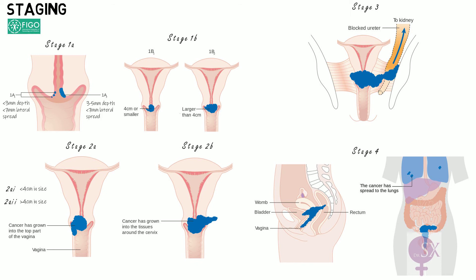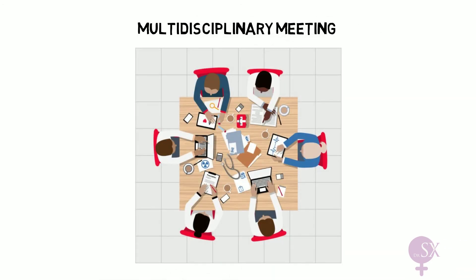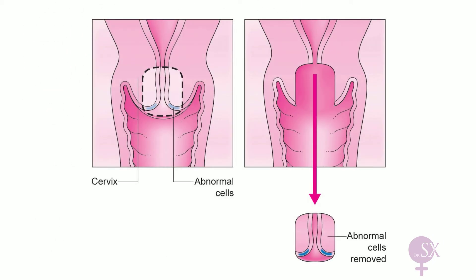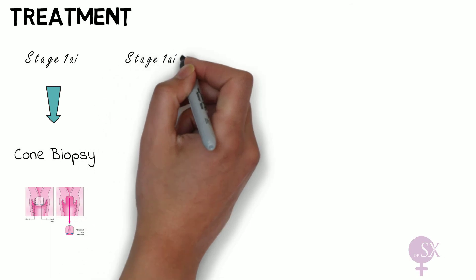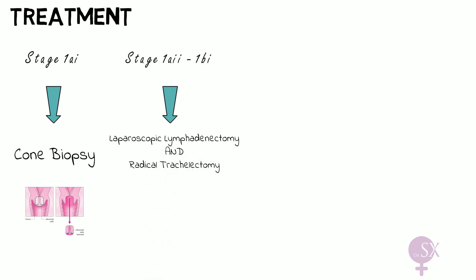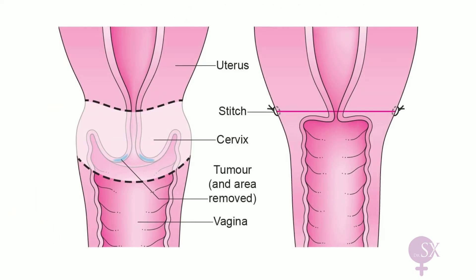Staging defines the most appropriate management. All cases are discussed at a multidisciplinary meeting including gynecologists, oncologists, radiologists, and pathologists. For stage 1a1, a cone biopsy is performed — removal of a cone-shaped piece of tissue from the cervix — sent to the lab to ensure clear margins. Like LLETZ, this may also lead to cervical incompetence. For stages 1a2 to 1b1, a laparoscopic lymphadenectomy is performed to confirm lymph nodes are not involved, followed by a radical trachelectomy — surgical removal of the cervix — for women wishing to preserve fertility.